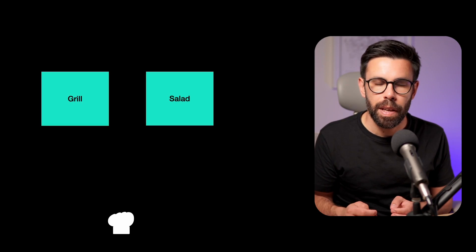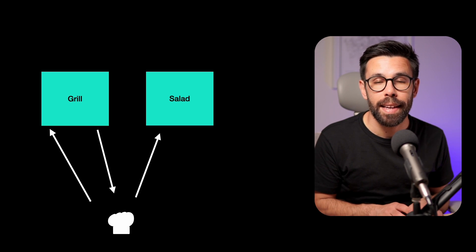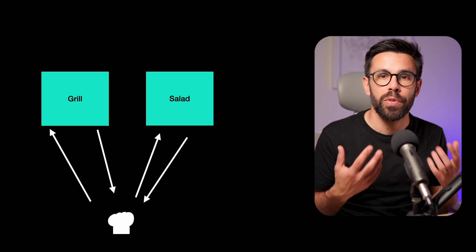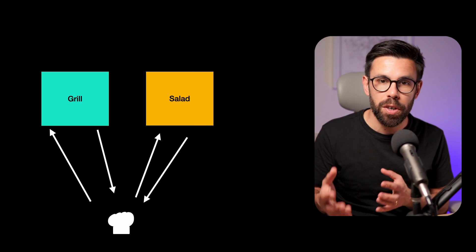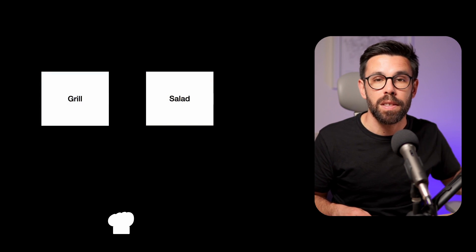Imagine a restaurant kitchen. A restaurant kitchen has several stations, and each station has one responsibility. Coupling is related to how independent those stations are from each other. If you have a grill station and a salad station that work independently — they don't depend on each other — the kitchen can flow naturally. If something goes wrong with one station, you have the flexibility to work around that difficulty without impacting the rest of the stations.